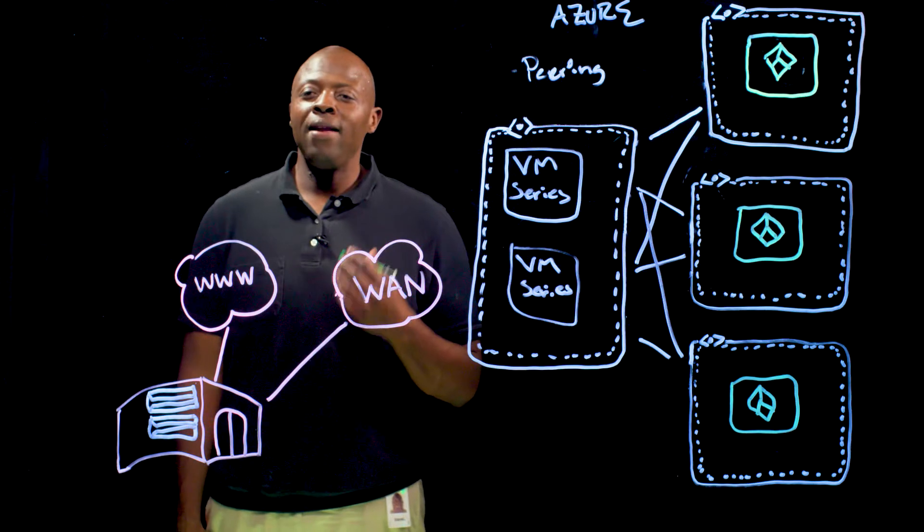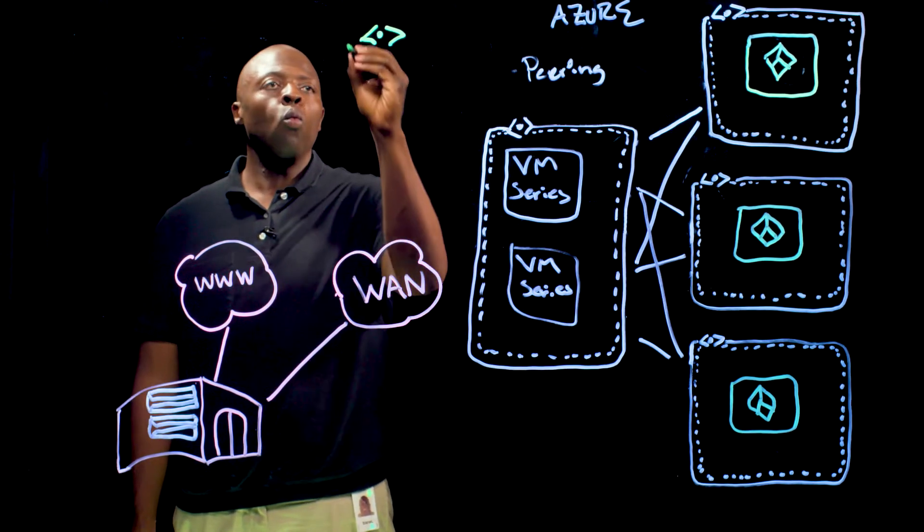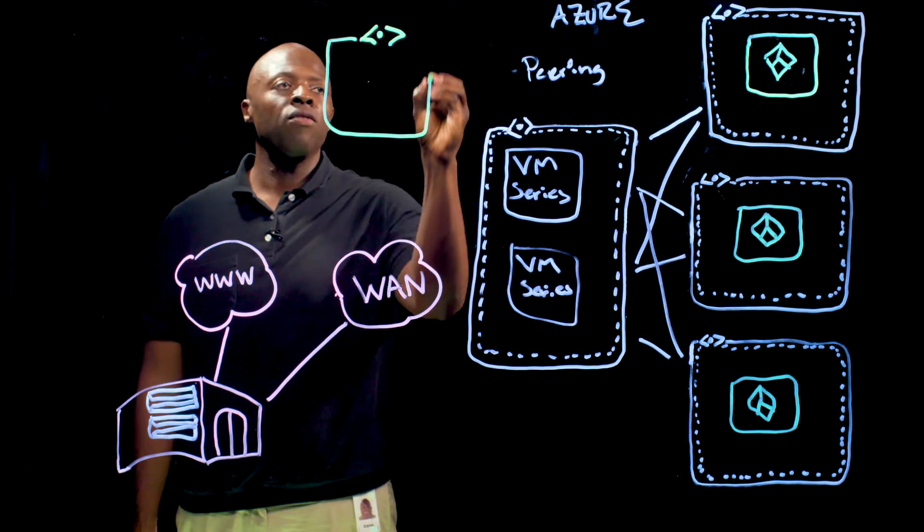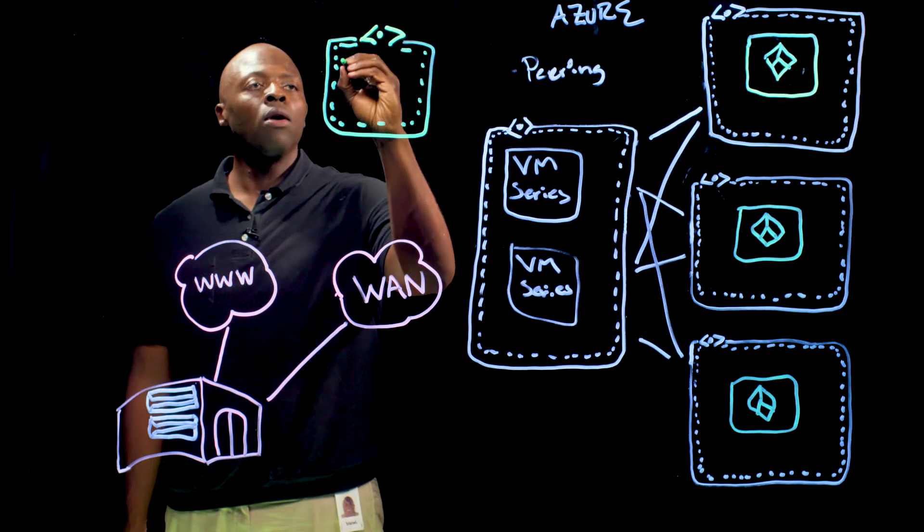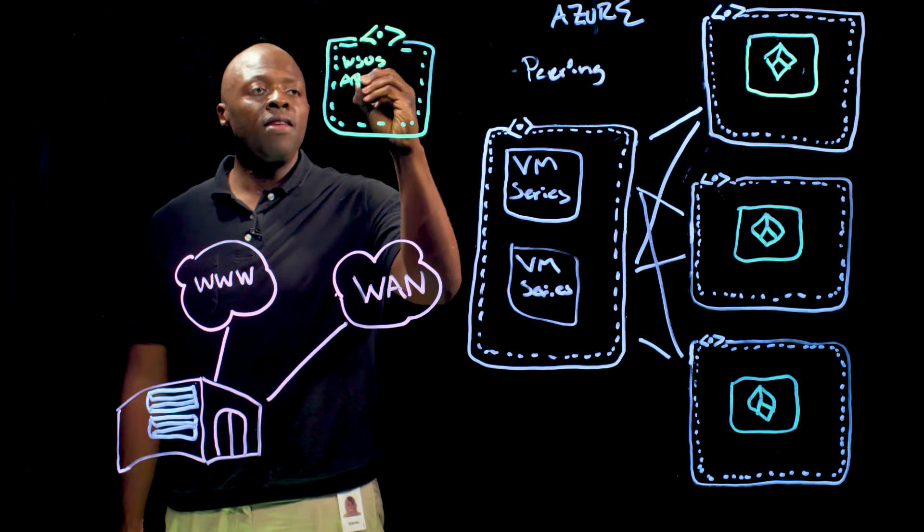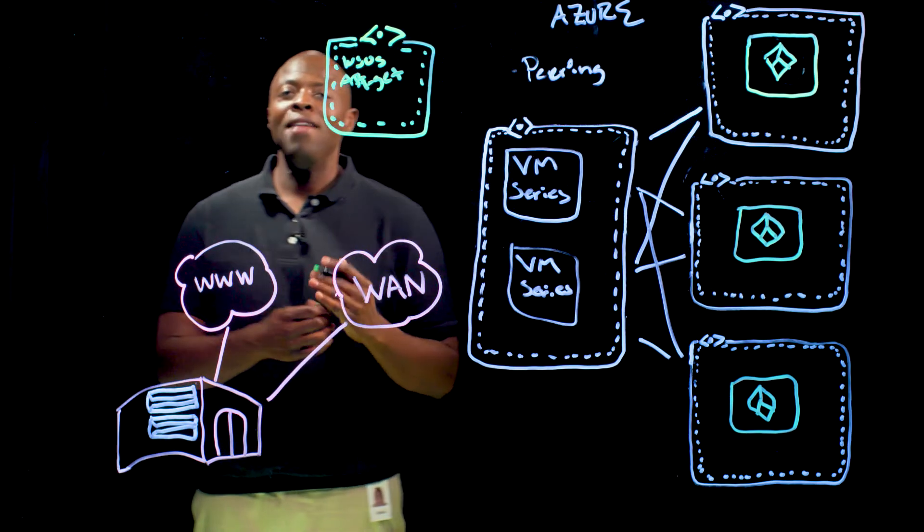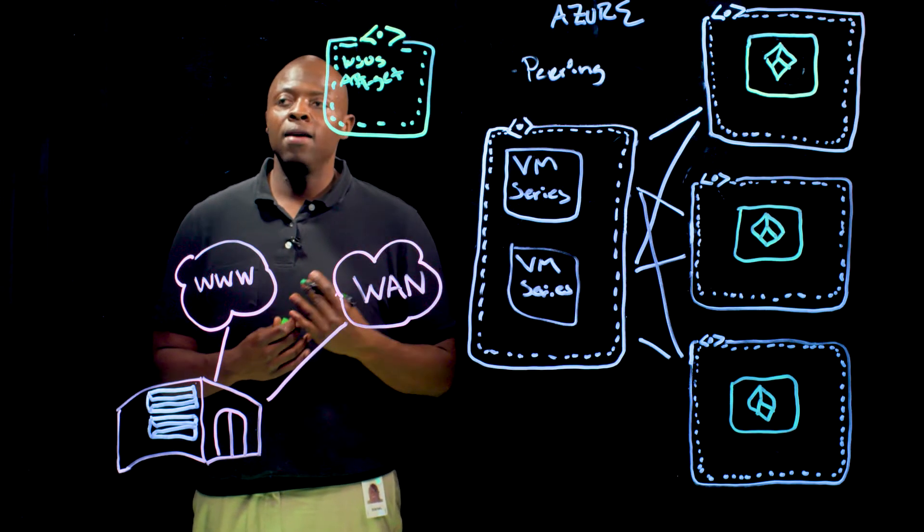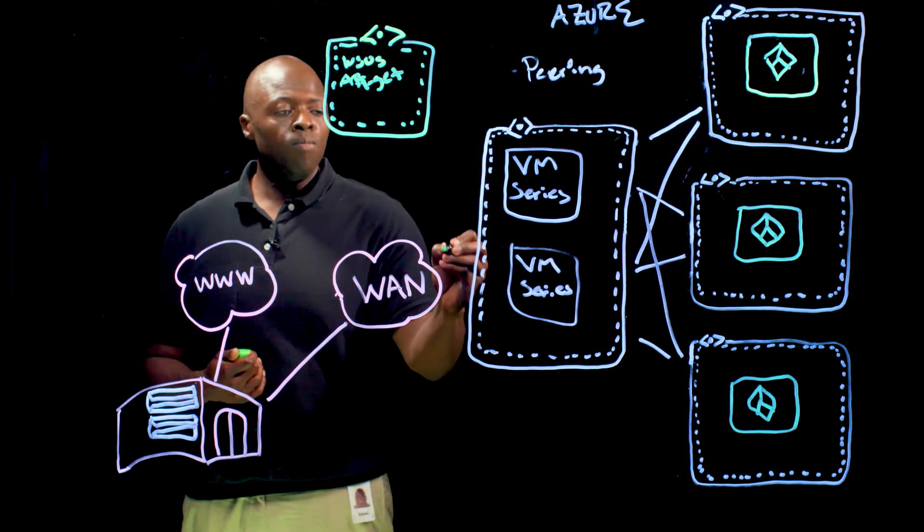Now for services that need to be accessed outbound, one of the options you have with this architecture is to create a services VNet or virtual network where you contain your Windows software update services, any APT-GIT local APT-GIT services, or any repositories that go to the internet for update patches, software updates, things of that nature. It pulls it down and that way your service can go directly to that location as opposed to going to the internet.